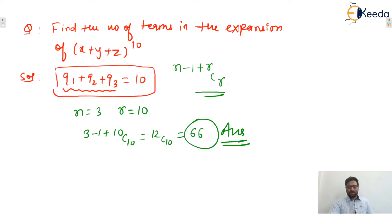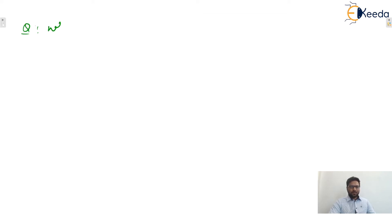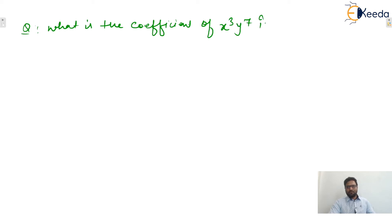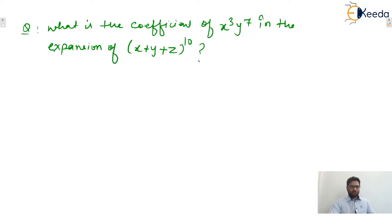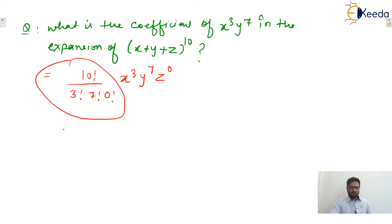Next: find the coefficient of x³y⁷ in the expansion of (x + y + z)^10. Here q1 = 3, q2 = 7, q3 = 0, and the coefficient is 10! / (3! · 7! · 0!) = 120.